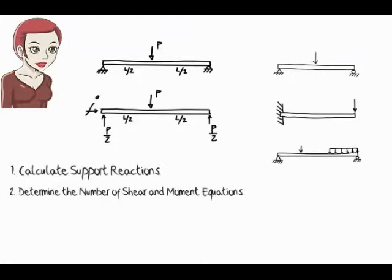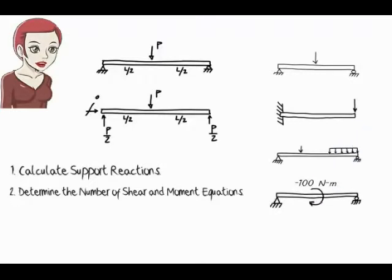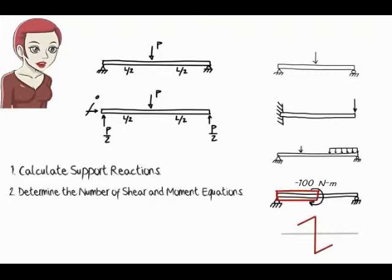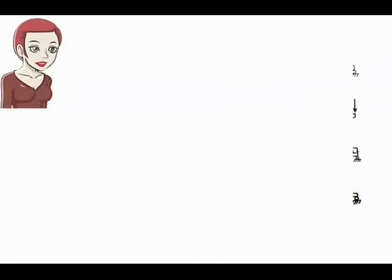We could have loading patterns that make the required number of moment equations more than that of shear equations. Consider a beam subjected to a concentrated moment at its midpoint. This causes a sudden drop — a discontinuity — in the beam's internal bending moment at that point. Consequently, two equations are needed for representing moment: one for the left segment up to the point of discontinuity, and another past the point. However, the concentrated moment does not cause any abrupt change in shear, so we can represent shear using one equation only.